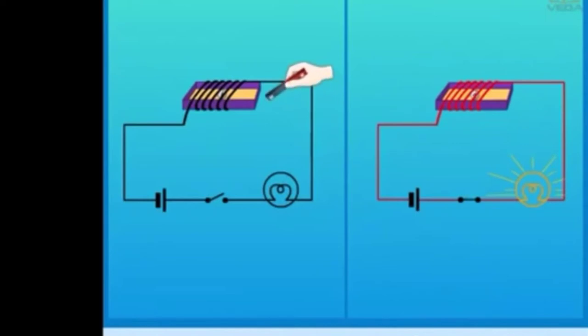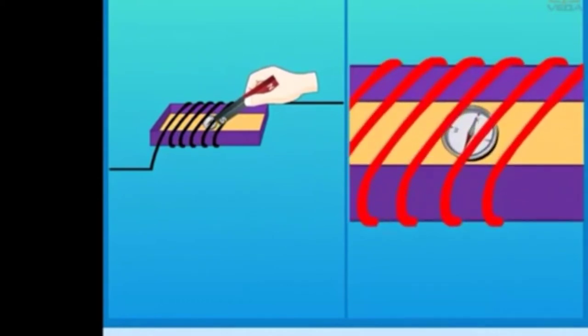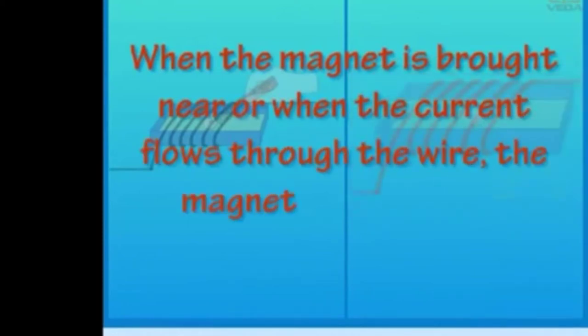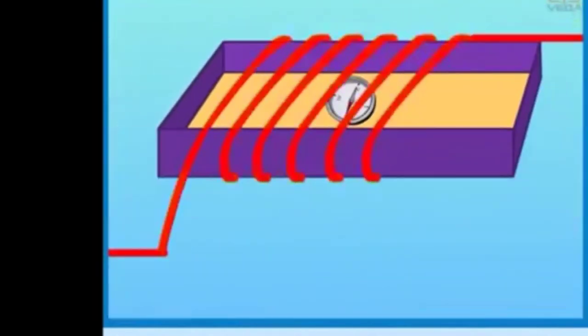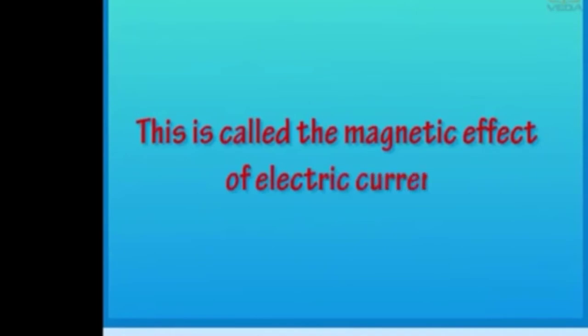If you relate the two experiments where the compass needle is deflected by the magnet and by the wire carrying electric current, when the magnet is brought near or when the current flows through the wire, the magnetic needle gets deflected. So we can understand that the wire acts like a magnet when electric current is passed to it. This is called the magnetic effect of electric current.